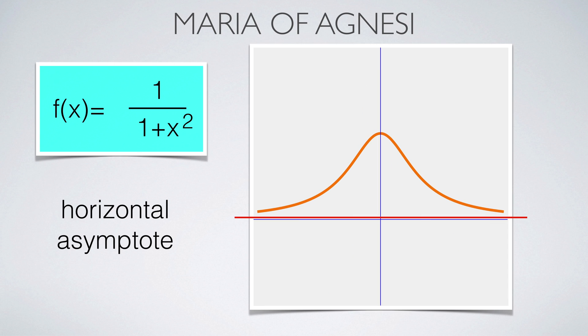Another important function is the function of Maria Agnesi. It is important in statistics where it is related to the Cauchy distribution, a high risk probability function. It is also important because it turns out to be the derivative of the arctan function, the inverse of the tangent function. The function has a horizontal asymptote.